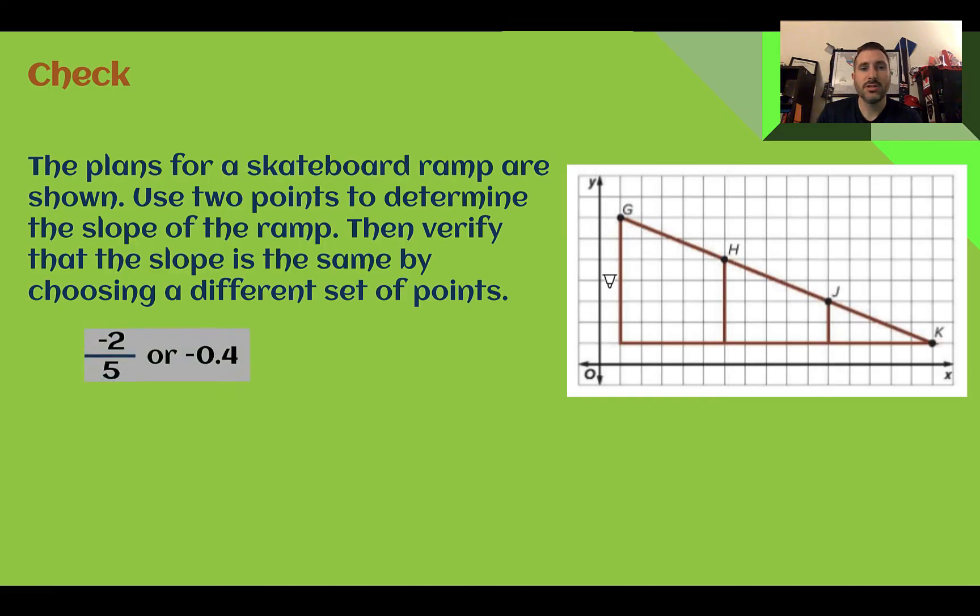Check your answer. So throughout this, it has a slope of negative two fifths. Or you could change it to a decimal to negative 0.4. So let's look at two different sets of points we could use. We could do J to K already formed a triangle here. Where it went down two over five. We can't reduce that. That's our lowest we can go, negative two over five.